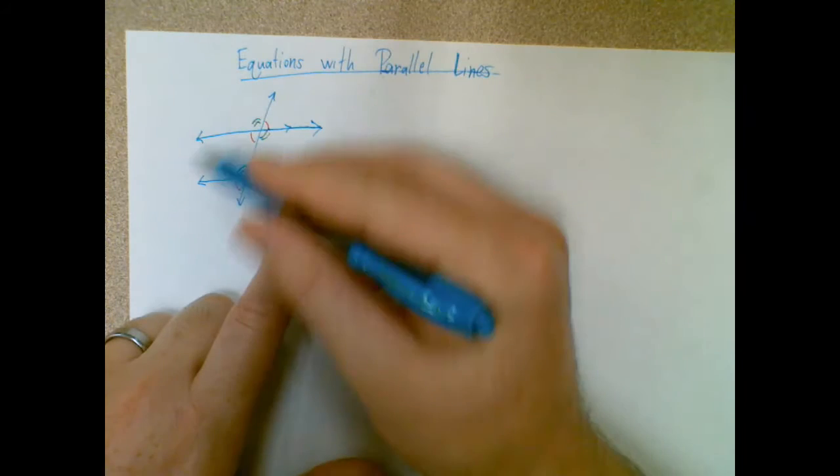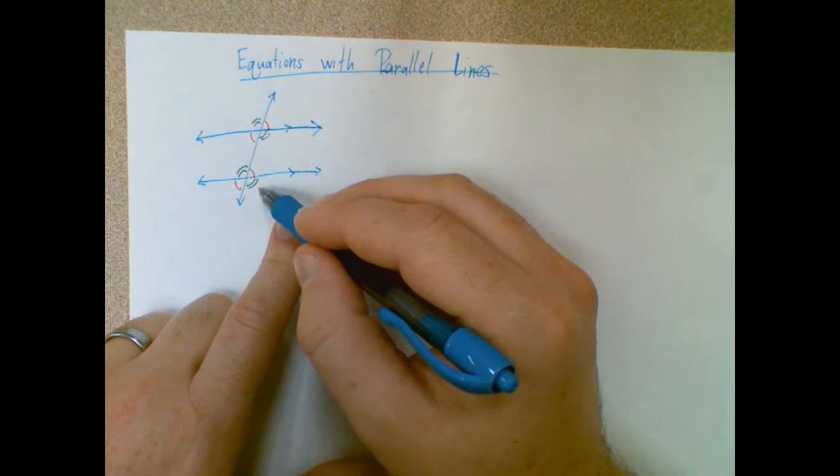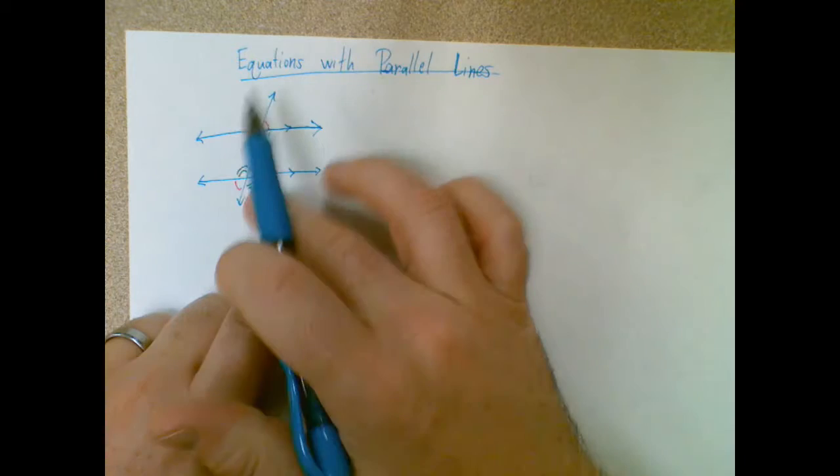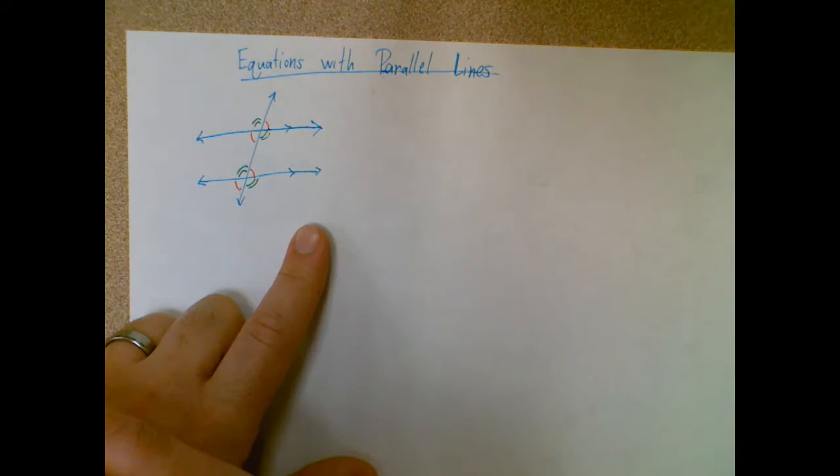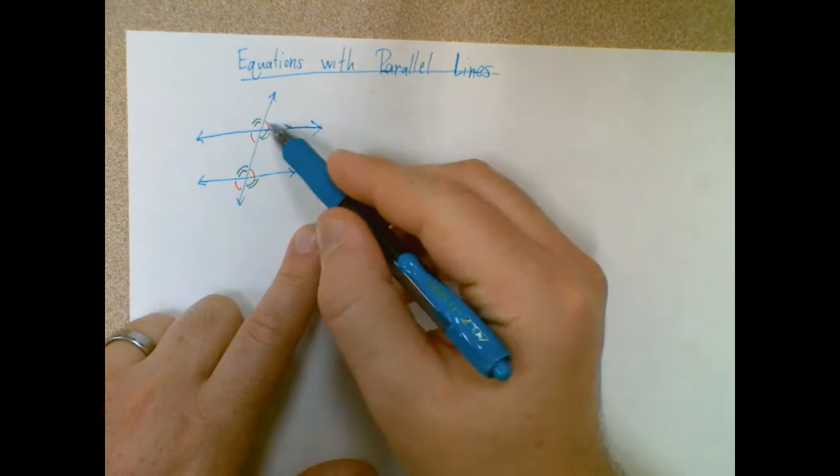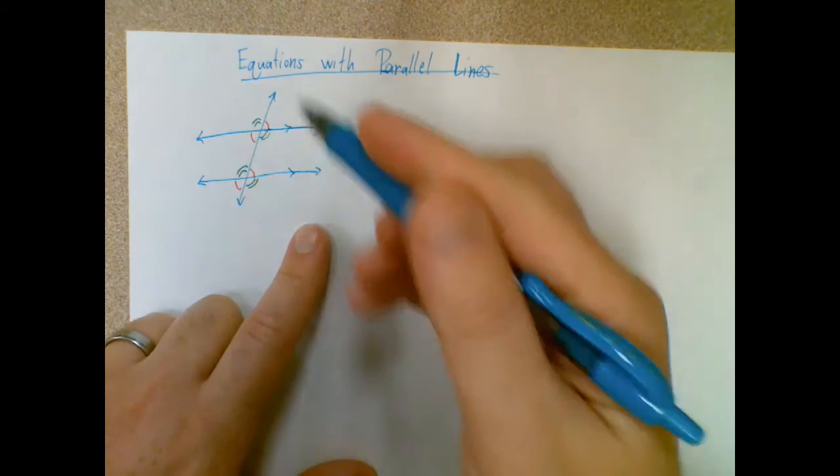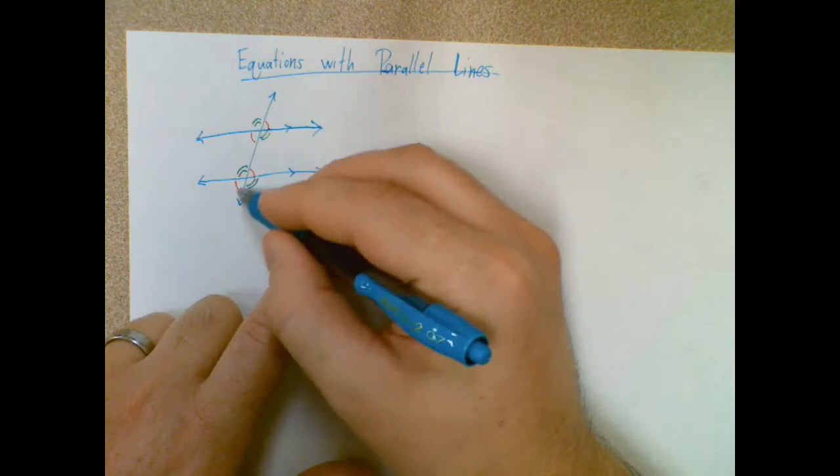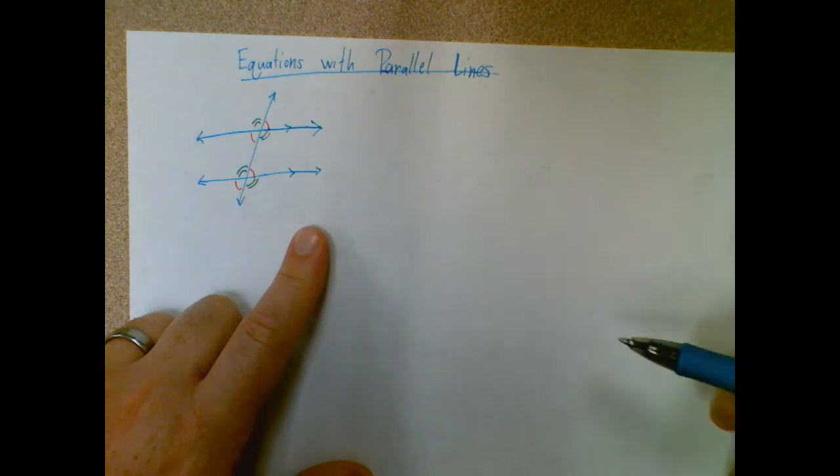Towards the end, we generated a pattern where all eight of the angles in a set of parallel lines cut by a transversal only had two measurements. I didn't use numbers so we can see what happens here, but all these red angles are equal and all these green angles are equal.